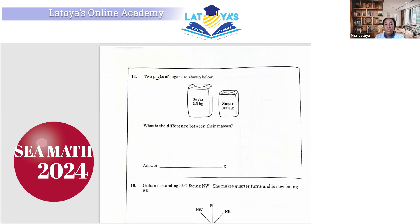Question 14, two packs of sugar are shown below. What is the difference in their masses? Well, one is 2.5 kg and one is 1,600 grams. So before we can find the difference, before we subtract to get the difference, we have to convert 2.5 kgs to grams. Now, how do we convert from kgs to grams? When you're going from a big unit to a small unit, you multiply. So we have to multiply by 1,000. What do you do when you're multiplying by 1,000? You can shift your decimal point three times to the right. If we were dividing, we would have shifted our decimal point three times to the left. So let's shift it.